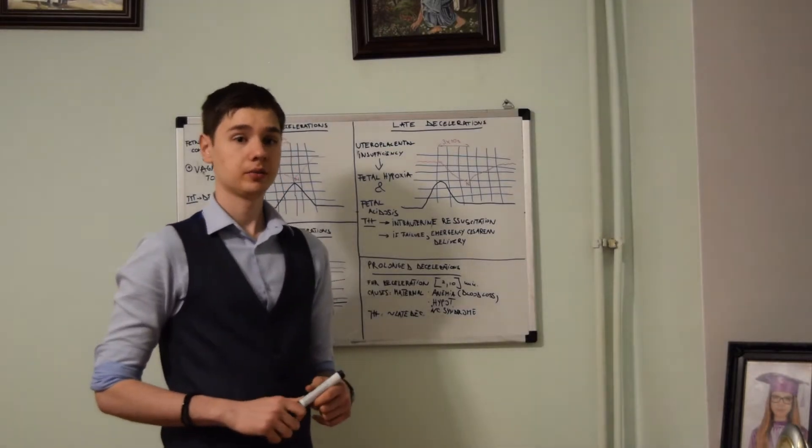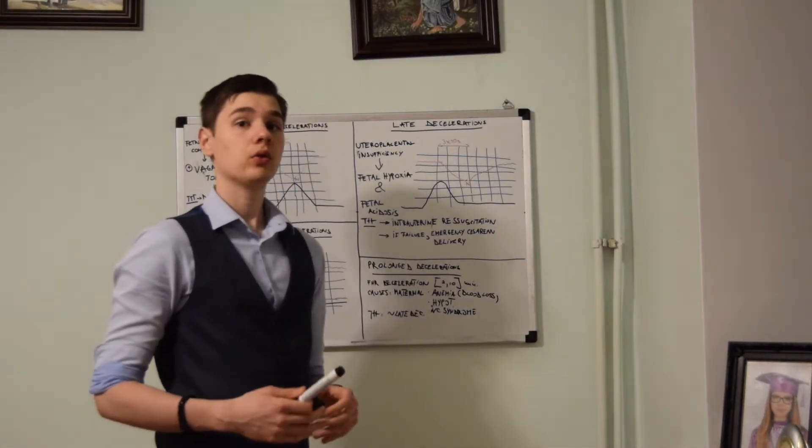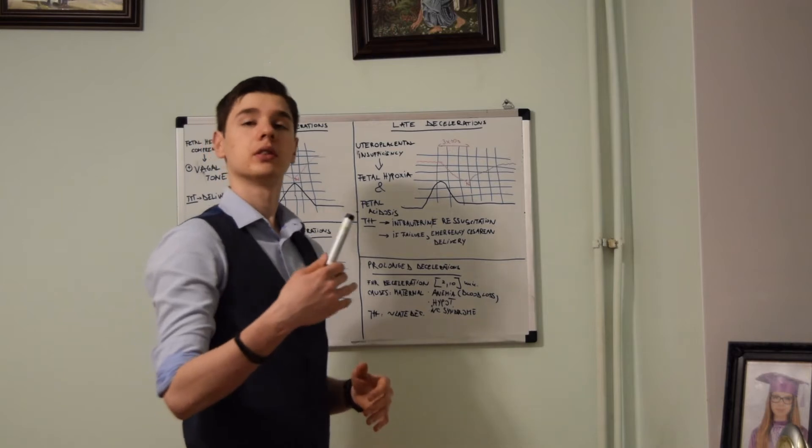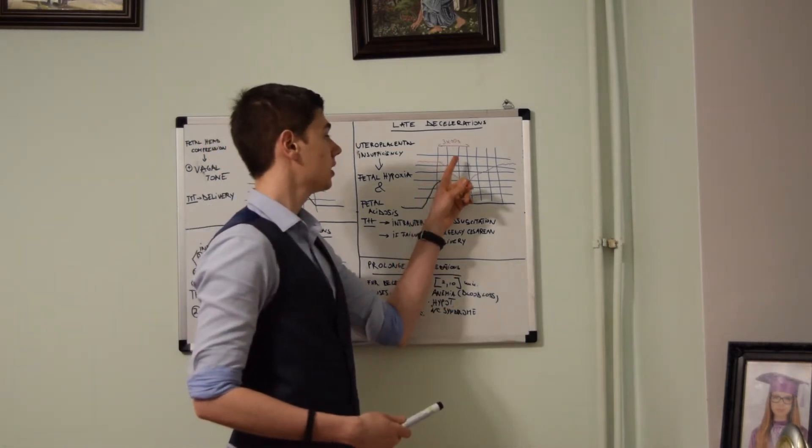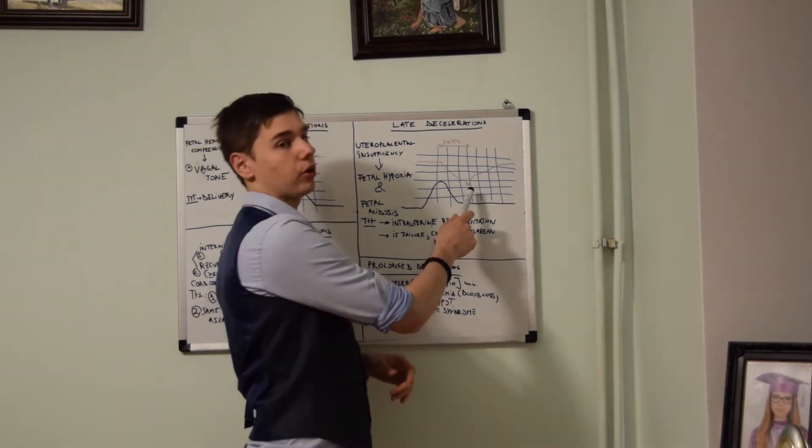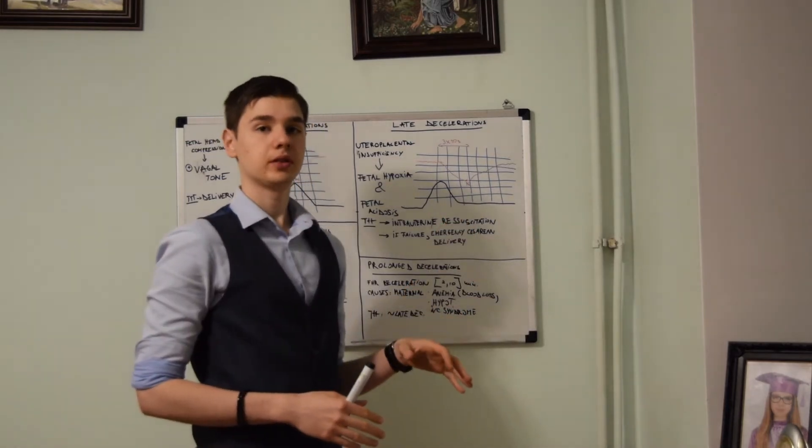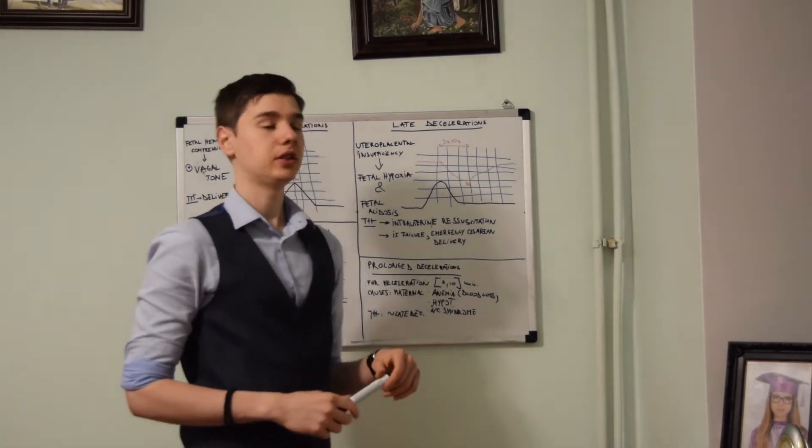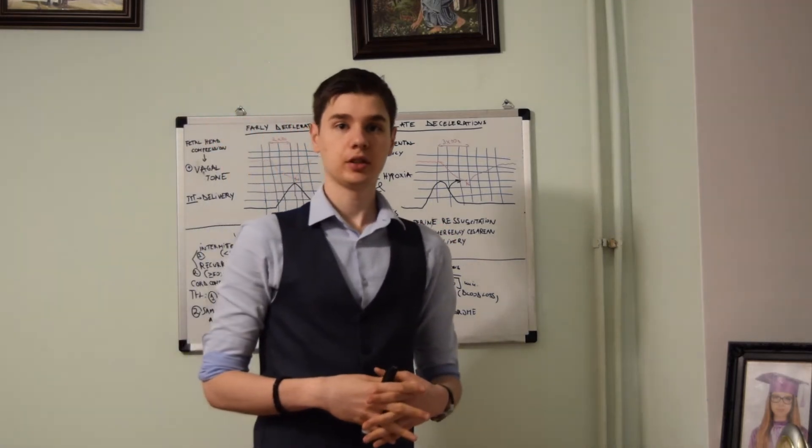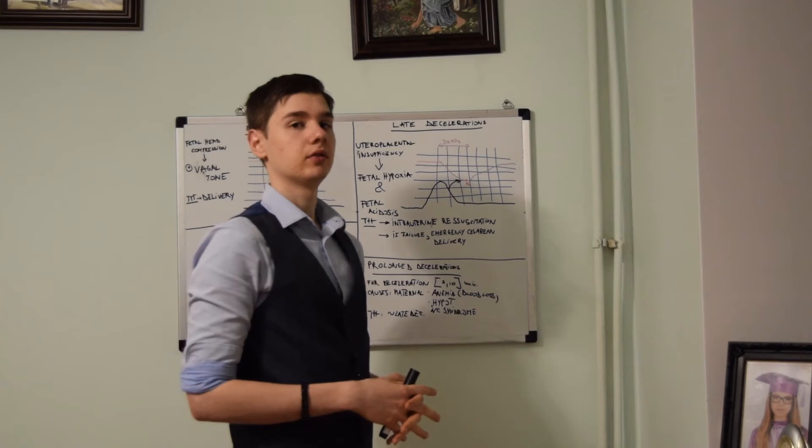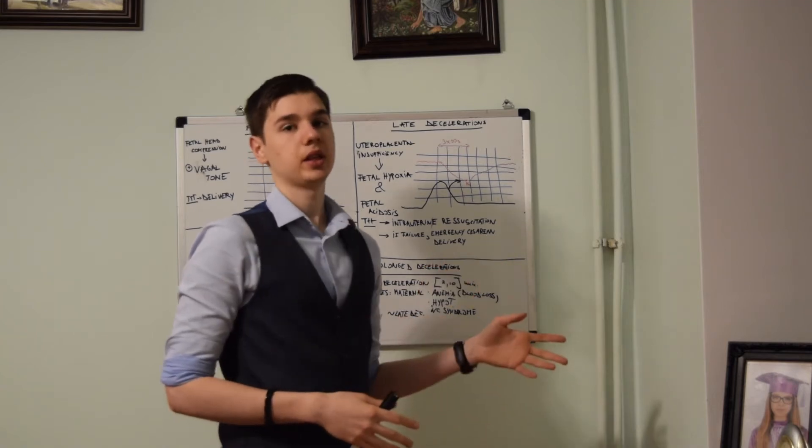On the fetal heart rate tracing, we will see that the nadir is also achieved gradually, meaning it will take more than 30 seconds to arrive to the minimal point. The fetal heart rate decreases after the uterine contraction. This type of deceleration will take between 30 seconds and 2 minutes.